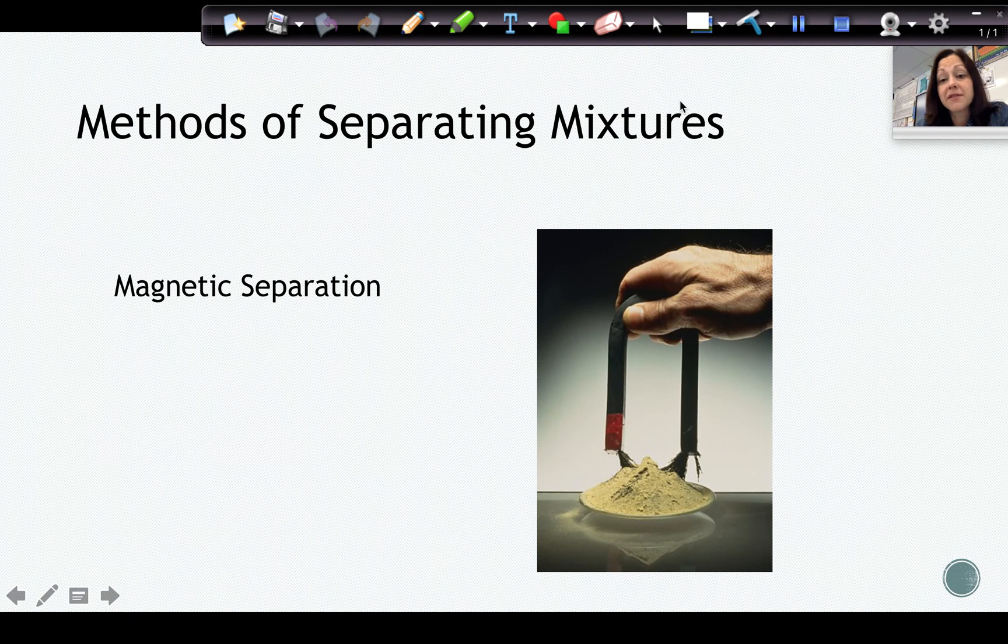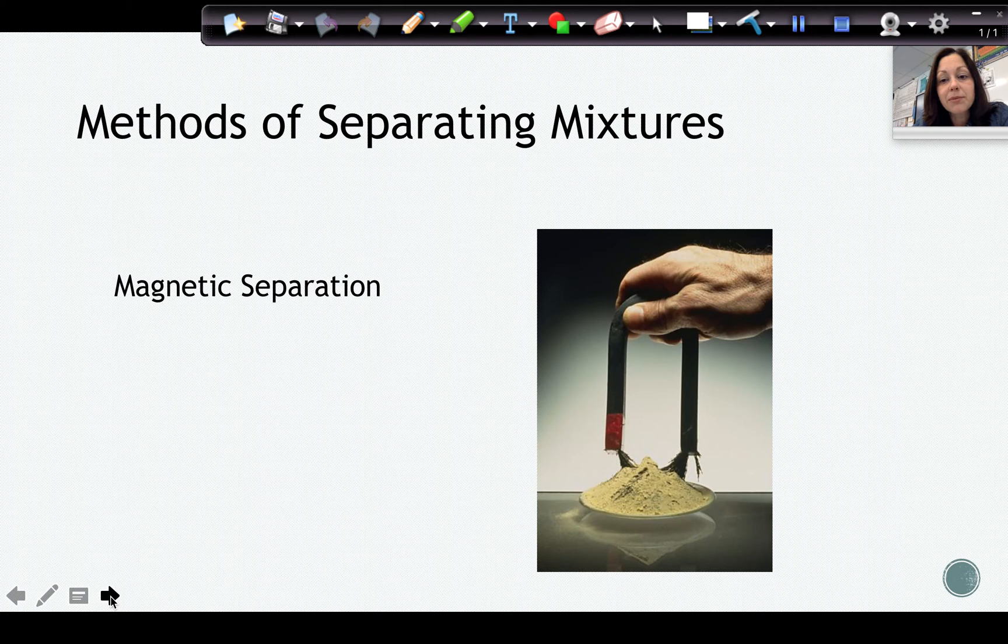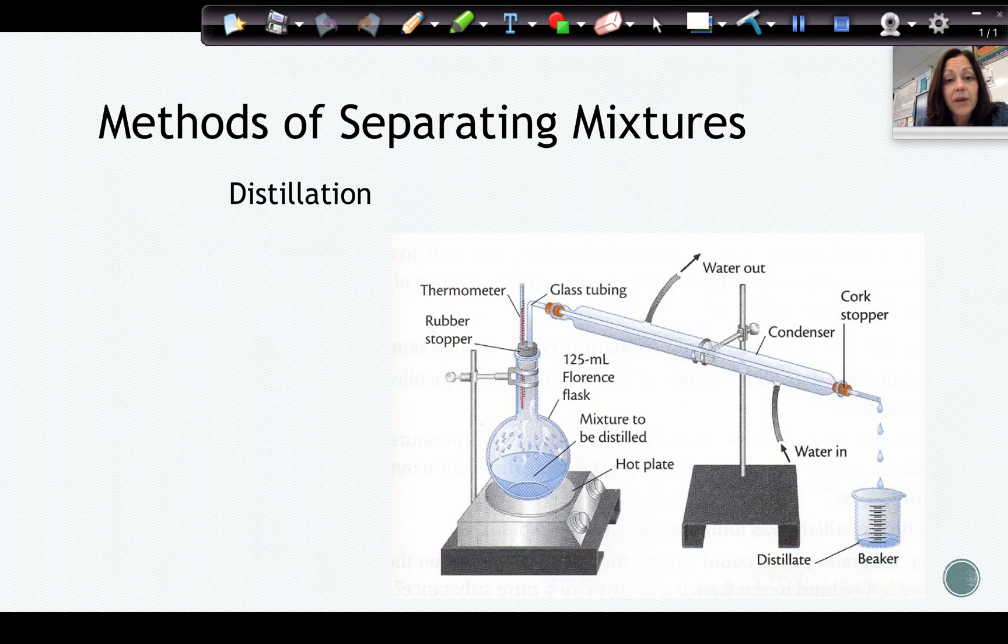When we're talking about methods of separating mixtures, we have a couple of different methods. We have magnetic separation where we can separate usually solid mixtures of iron mixed in sand or iron mixed in some other solid, and the magnet will pull out only the iron, leaving the other component behind. We have distillation, which, remember, when we're using distillation, we're separating liquids with different boiling points.